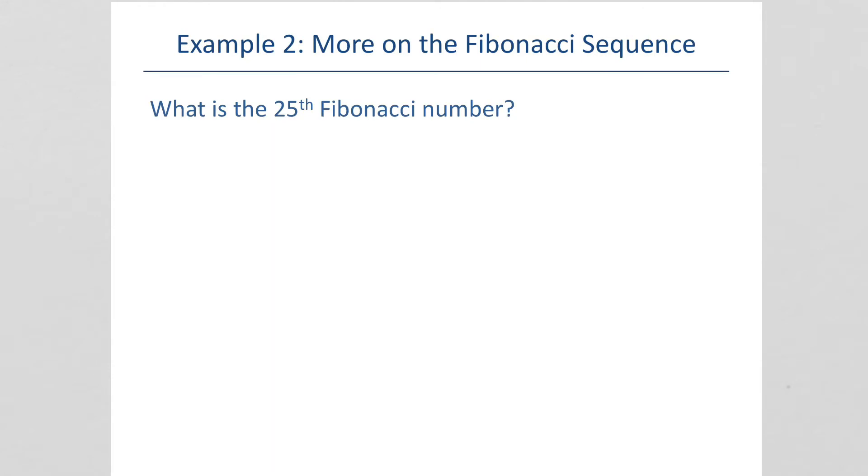The next question asks us, what's the 25th number in the Fibonacci sequence? Well, we've already found F of 12 in the previous. It was 55 plus 89 or 144. So, to find F of 13, we would have to take 89 plus 144 to get 233. F of 14 would be 144 plus 233, which is 377. F of 15 would be 233 plus 377, which is 610.